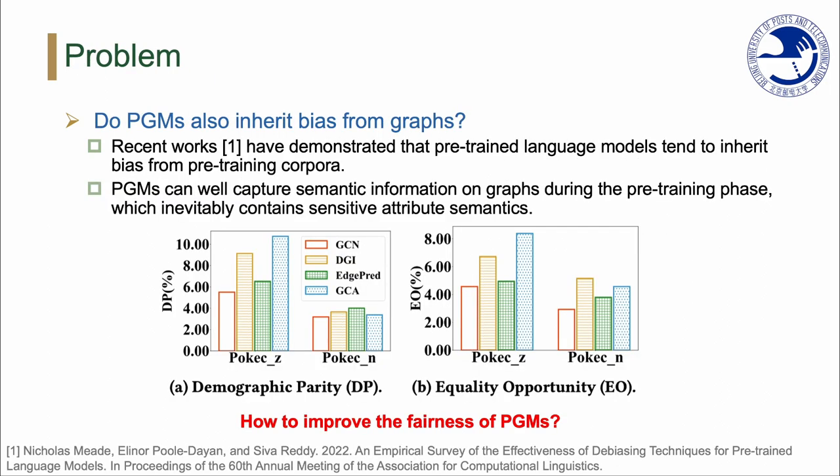However, recent works have demonstrated that pre-trained language models tend to inherit bias from pre-training corpora. With the same paradigm, PGMs raise the following question: do PGMs also inherit bias from graphs?